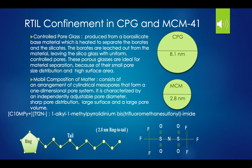These porous glasses are ideal for material separation because of their small pore size distribution with high surface area. MCM stands for mobile composition of matter and consists of an arrangement of cylindrical mesopores that form a one-dimensional pore system. It is characterized by an independently adjustable pore diameter, sharp pore distribution, large surface area, and large pore volume.